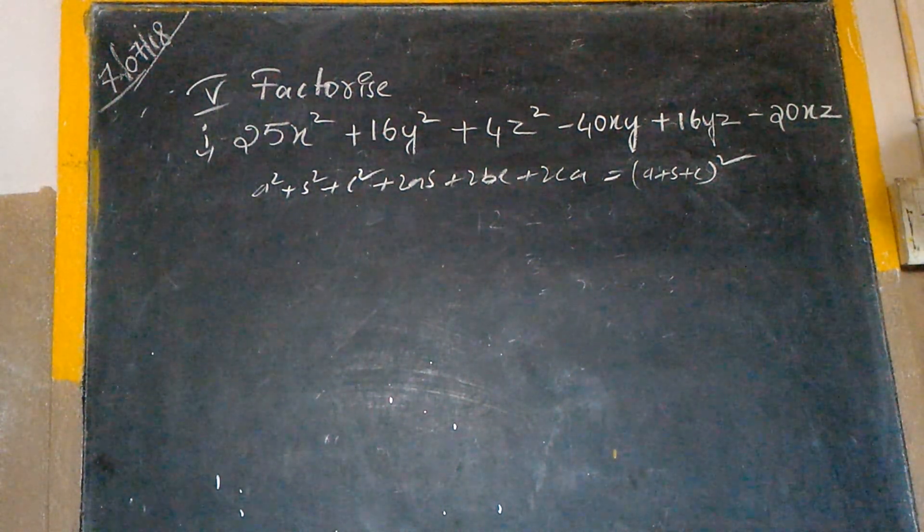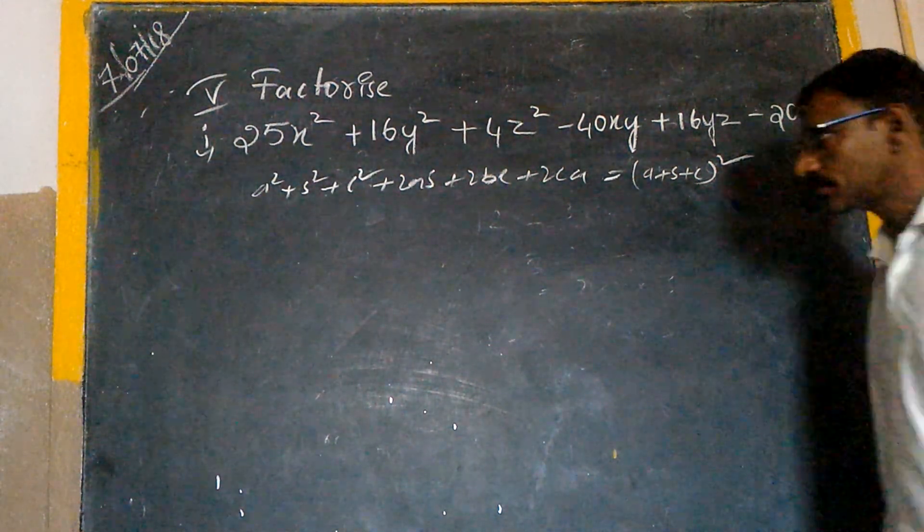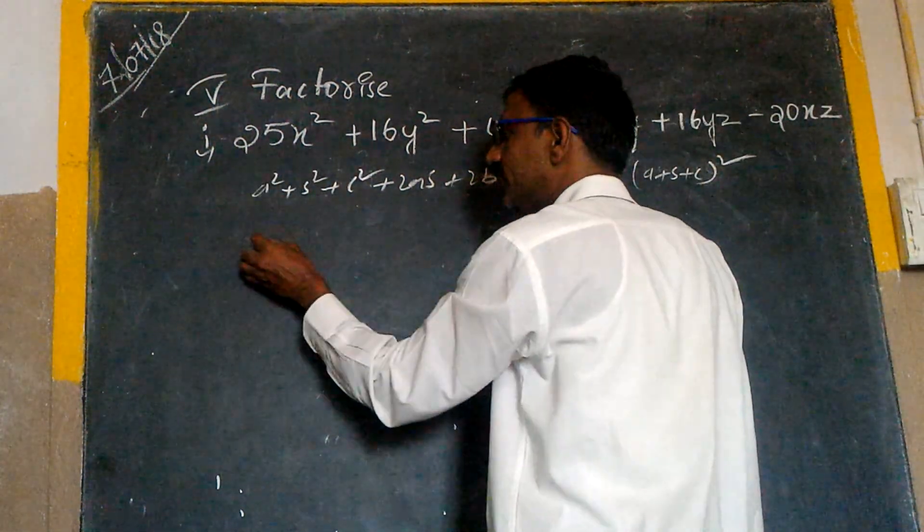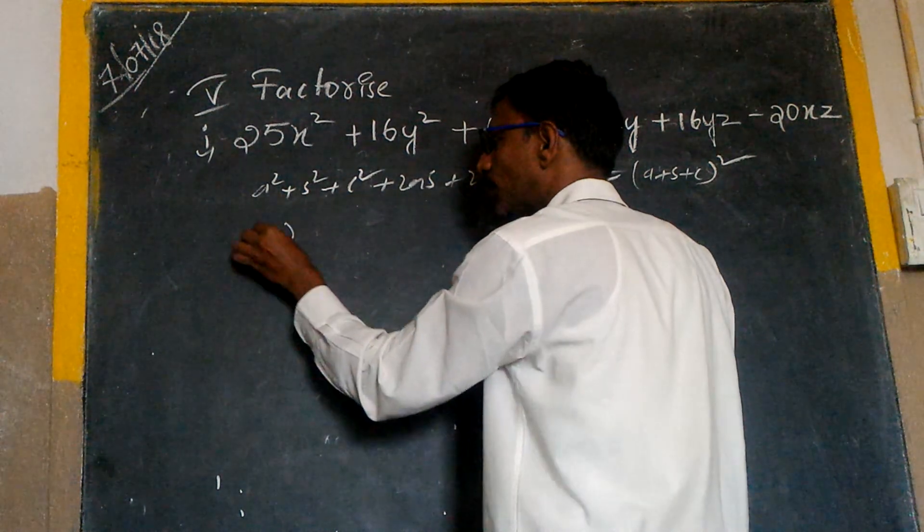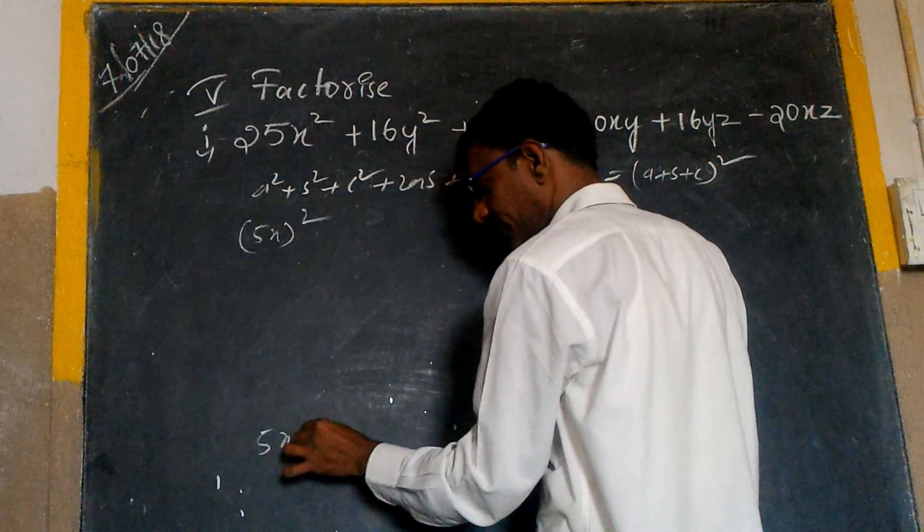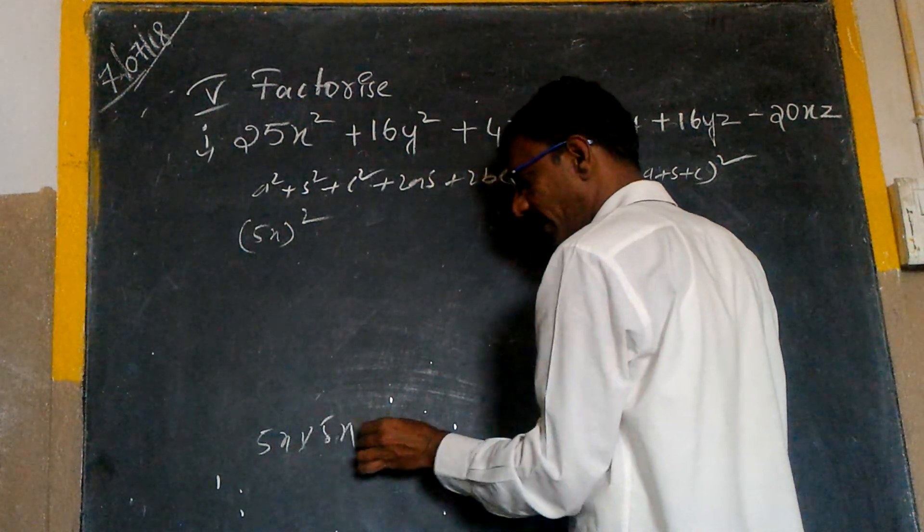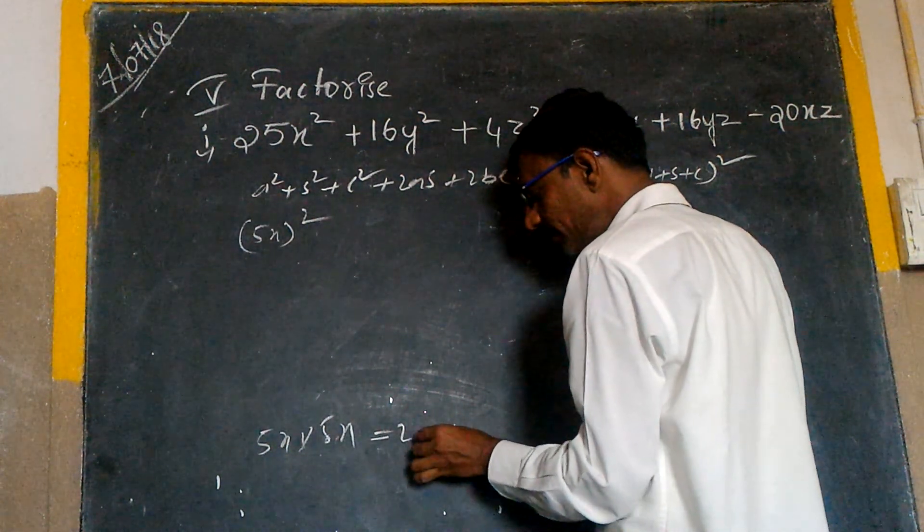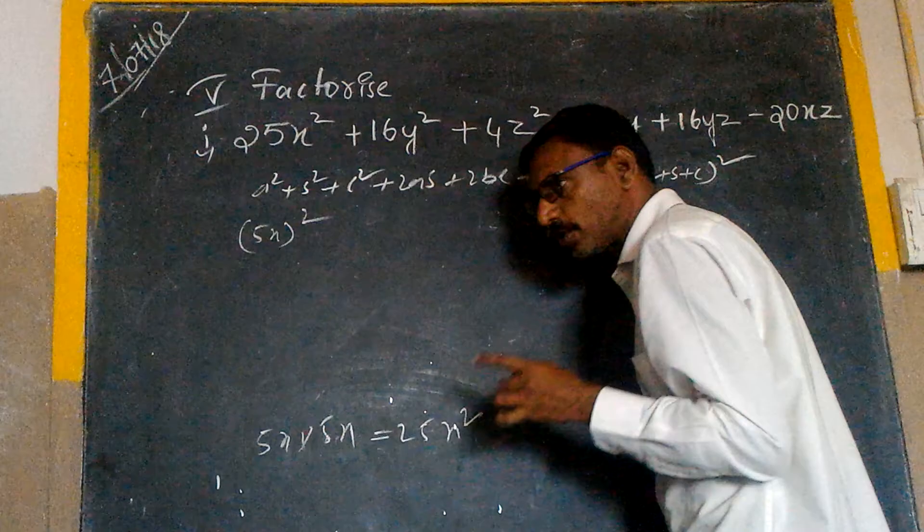Therefore x should be negative. As usual, this we can write 5x whole square. 5x whole square is nothing but 5x into 5x. 5x is 25x square, yes sir, I told you clearly.